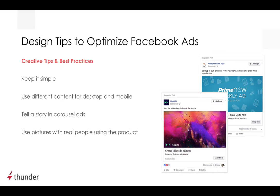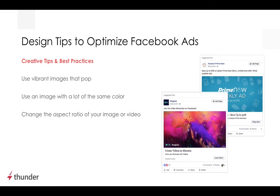Use pictures with real people using the product. Instead of using images of your product alone, show an action shot with the person engaging with it — this creates sensory currency which will help make the ad more relatable and help users better visualize using the product. Use vibrant images that pop: capture attention with vibrant, high contrast colors, and create visual excitement so your ad stands out as users browse their feed. Use an image with a lot of the same color: while vibrant colors grab attention, too many colors may distract the user from your message, so use color schemes that complement each other. Change the aspect ratio of your image or video for better visibility and to ensure your ad always looks high quality in Facebook's news feed.